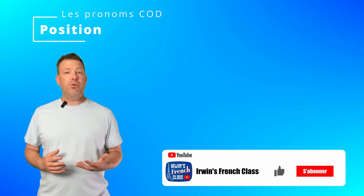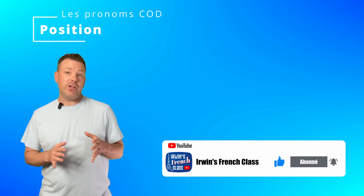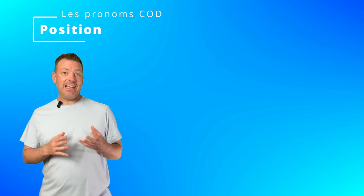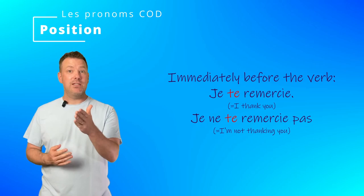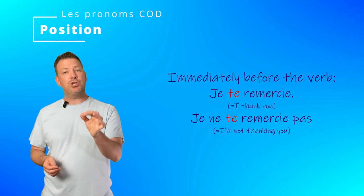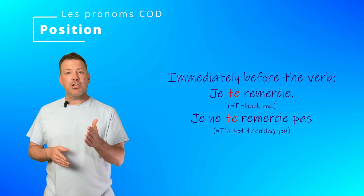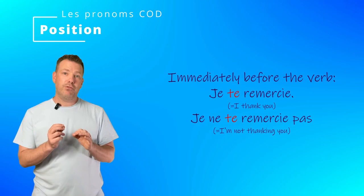In terms of their position regarding the verb, you have probably already noticed that they go immediately in front of the verb, in positive as well as in negative sentences. For example, you can repeat this after me: Je te remercie. Je remercie qui? Toi. Te is the corresponding C-O-D pronoun, positioned right in front of the verb. Negation: Je ne te remercie pas — the te sticks to the verb.